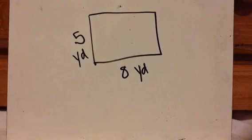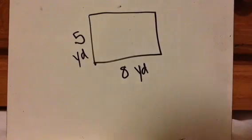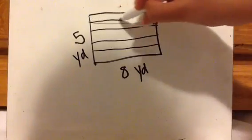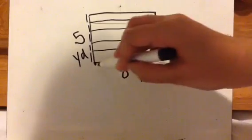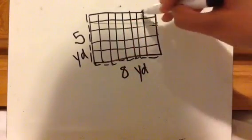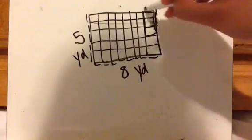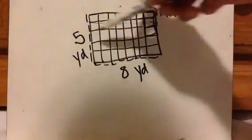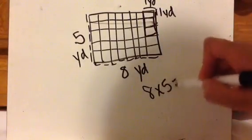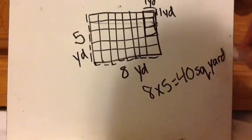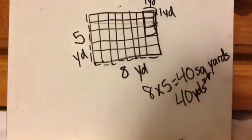Okay, so let's say this is the measurements of a backyard and it's eight yards by five yards. What is the area? You can envision five yards one way and eight yards the other way. There are squares in here that are one yard by one yard. Instead of counting all of those squares, you can just do eight times five, and that gives you 40 square yards, or 40 yards squared.